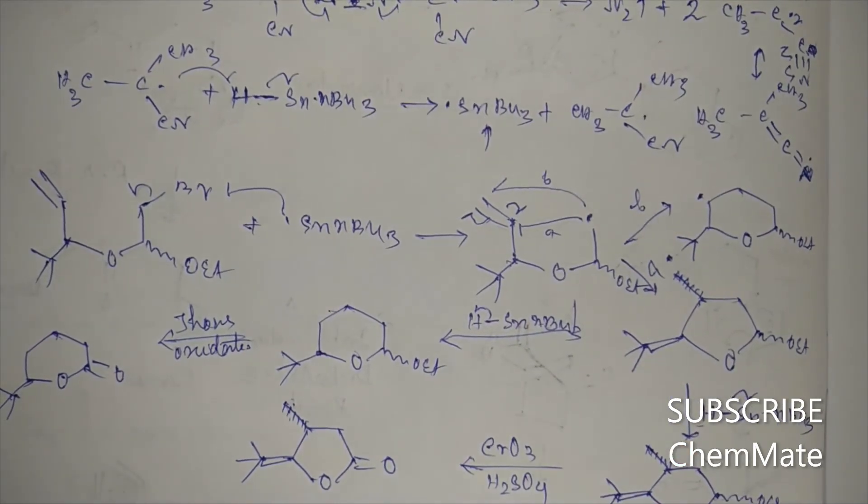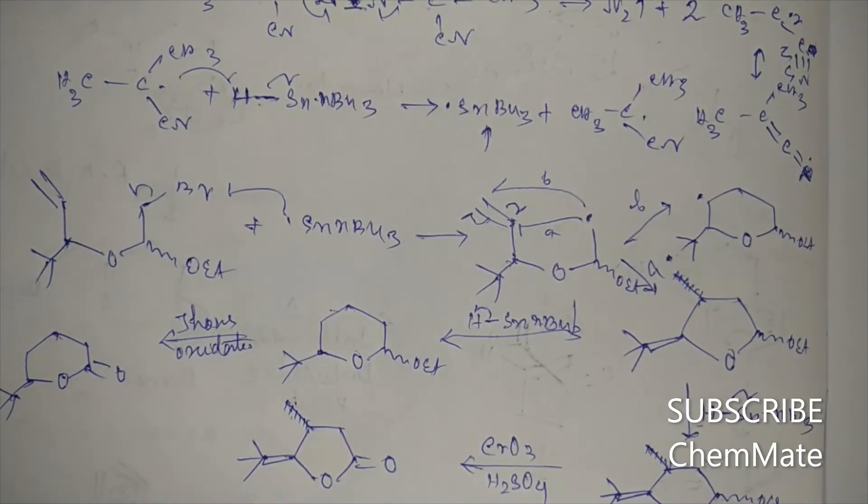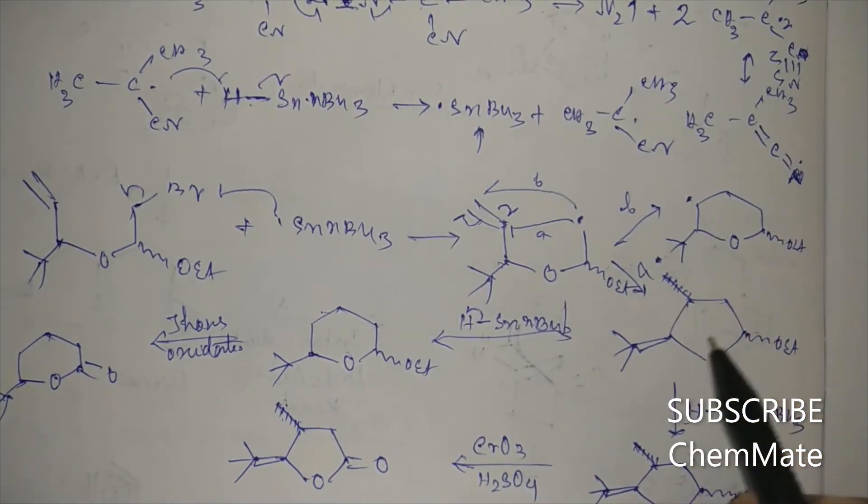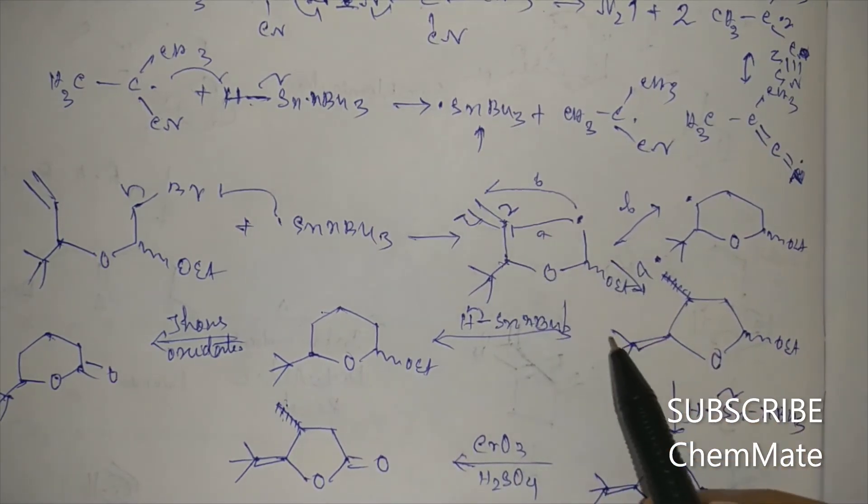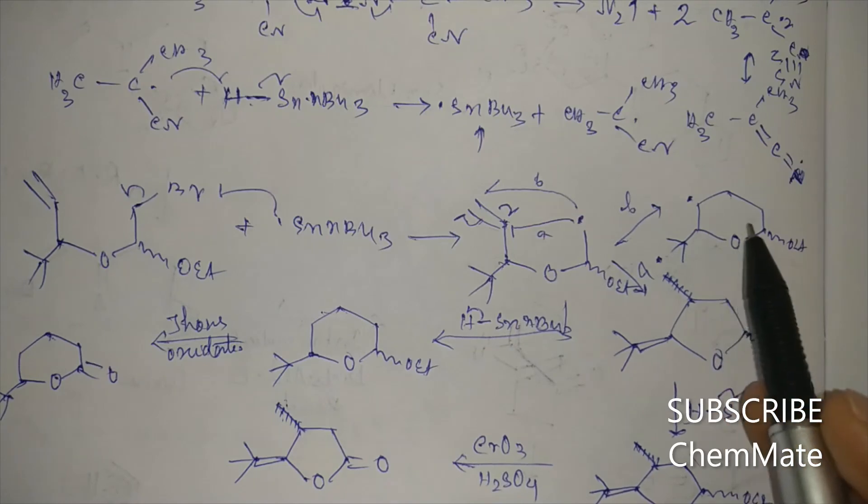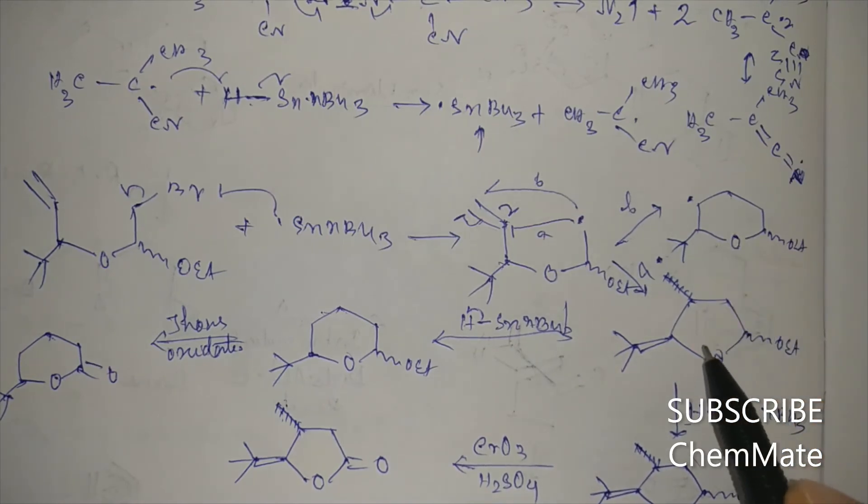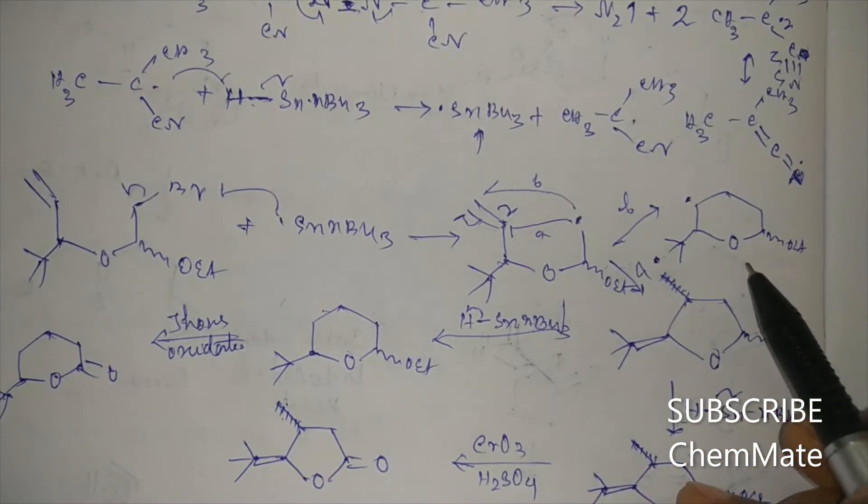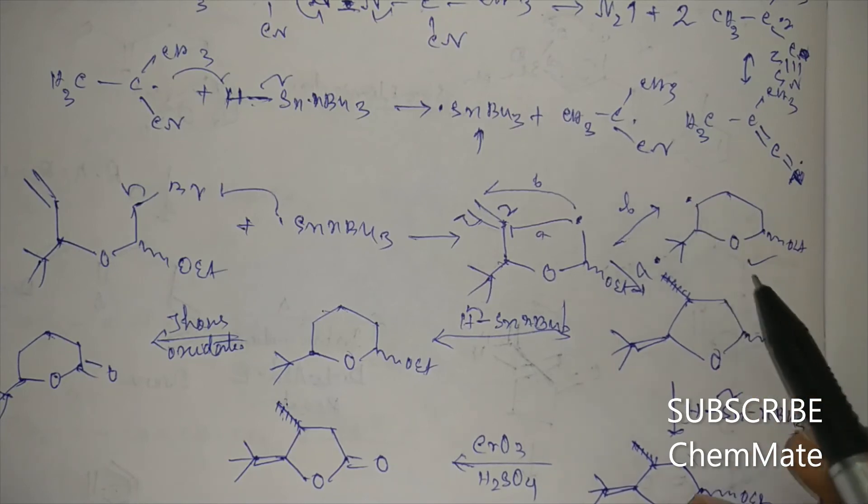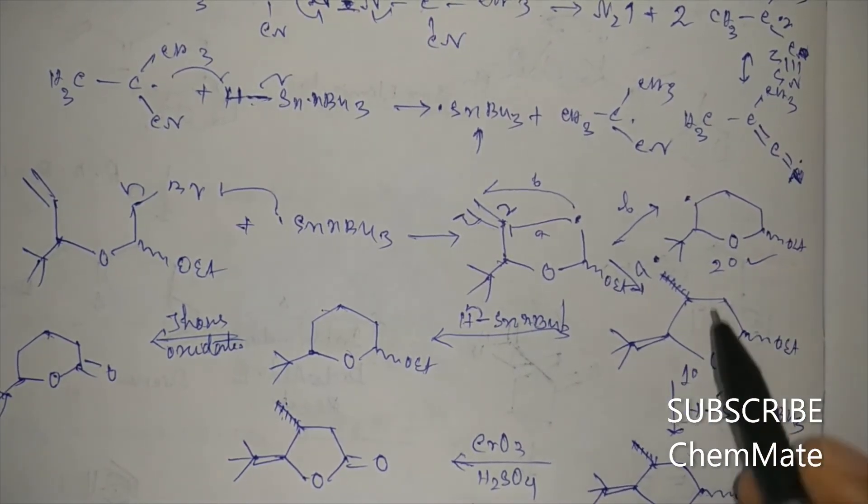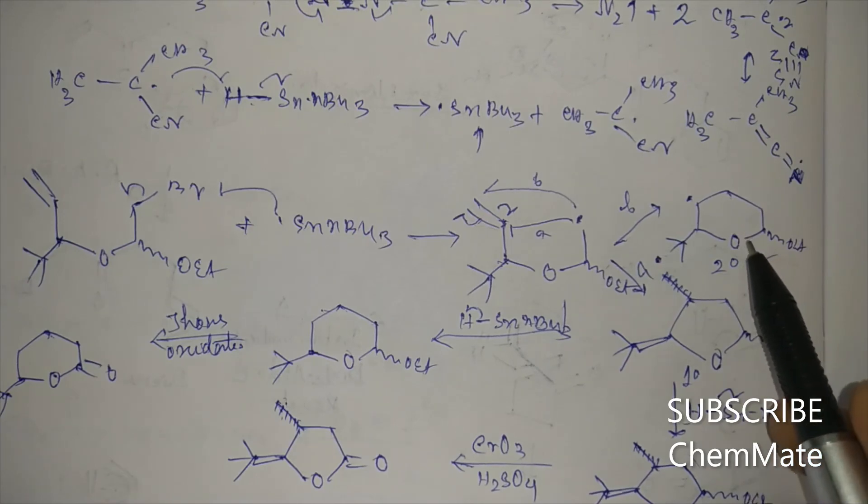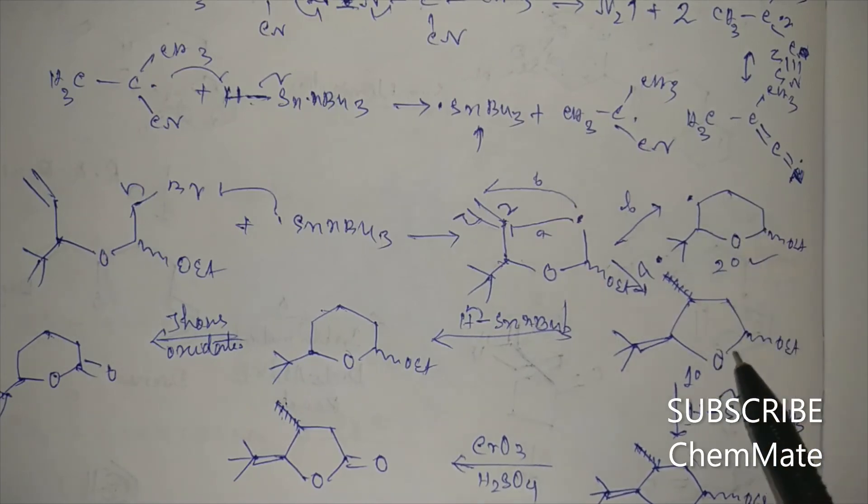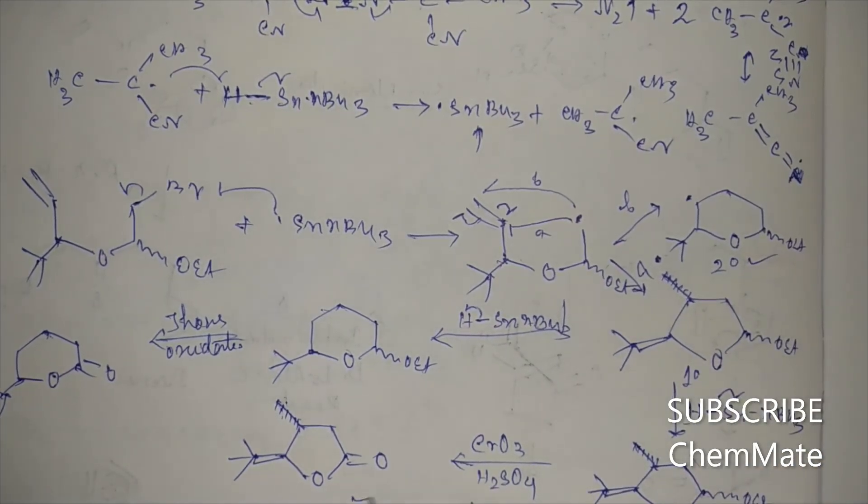But between these two, this will be the major product. Because here, the rate of formation of the 5-member ring will be higher than the rate of formation of the 6-member ring. But if we compare the stability of these two radicals, then the stability will be higher for the 6-member. So this product will be the major product.